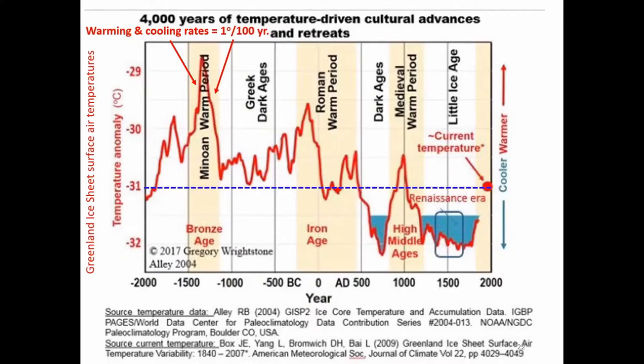Here is a chart of Greenland's ice sheet surface temperatures over the last 4,000 years. Looking back over the last 4,000 years of climate history, covering humanity's most recent cultural history, global temperatures significantly warmer than today in the past offered no impediment to human cultural development and progress, and are unlikely to do so in the future. Of note is the warming and cooling rate of about 1 degree per 100 years for the major warming and cooling episodes.